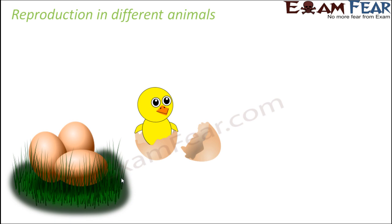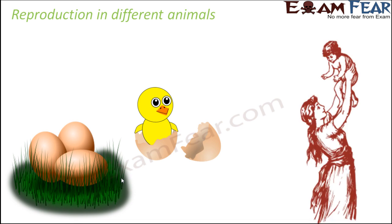So basically in this case, the mature birds do not directly give birth to their young ones but they lay eggs. Whereas in certain other animals like human beings, they directly give birth to young ones. So these are the two ways by which animals reproduce — either they directly give birth to young ones, or they lay eggs and from the eggs new young ones are formed.